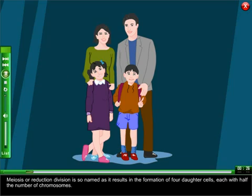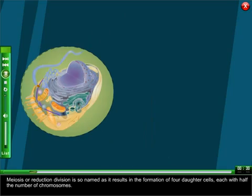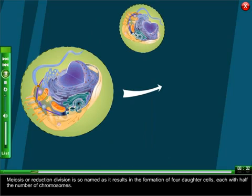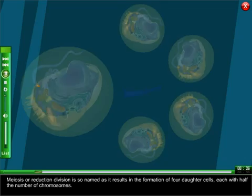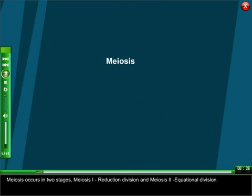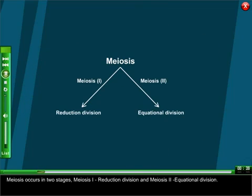Meiosis or reduction division is so named as it results in the formation of four daughter cells each with half the number of chromosomes. Meiosis occurs in two stages: meiosis one reduction division and meiosis two equational division.